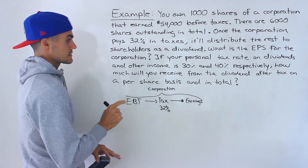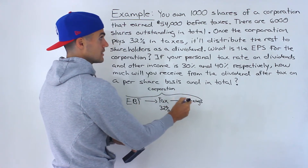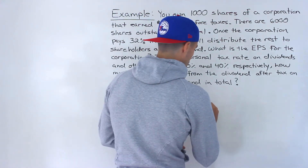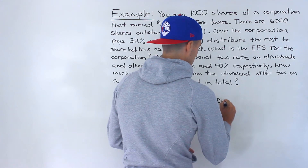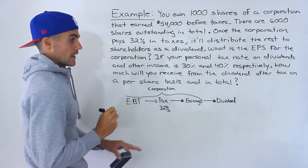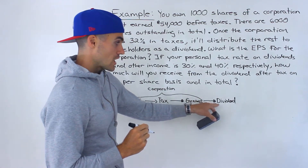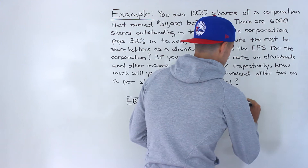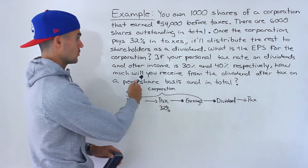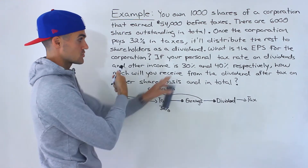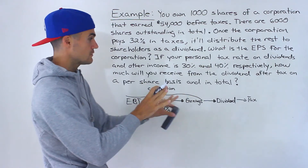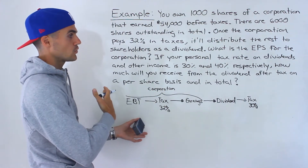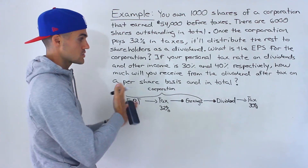Now what's happening is after this, the corporation is taking these earnings and distributing all of them to shareholders as a dividend. Now the shareholders have to pay tax on this dividend personally. We're told that your personal tax rate on dividends and other income is 30% and 40% respectively. But since we're just dealing with dividends, the tax rate is going to be 30%. The 40% is actually irrelevant in this question because we're not told of other income — we're just receiving the dividends.